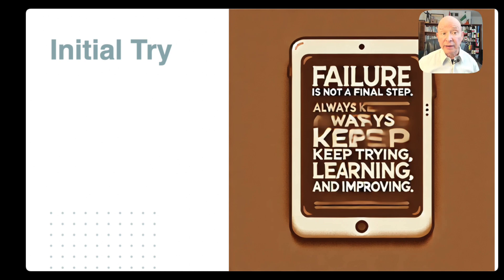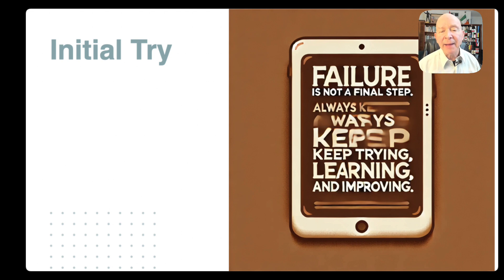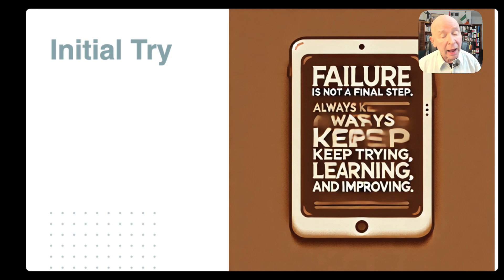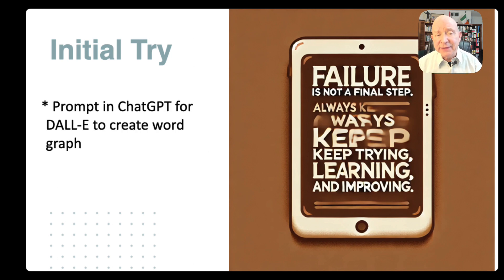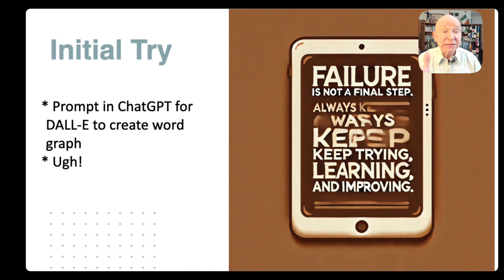I had a word graphic I created with words like 'failure is not a final step, always keep learning, always keep trying.' Notice what happened to the words when I took it through the tool — in this case I was using DALL-E 3 from OpenAI. I love their product, it's great, but sometimes it stumbles on the text just like this. That initial try was there, but when I looked at it, it was just unusable. I couldn't use it except to show 'here's something that doesn't work.' So we've got to move around that.